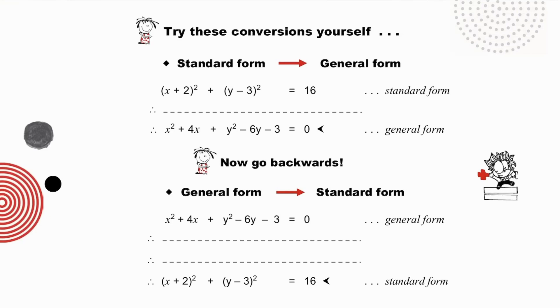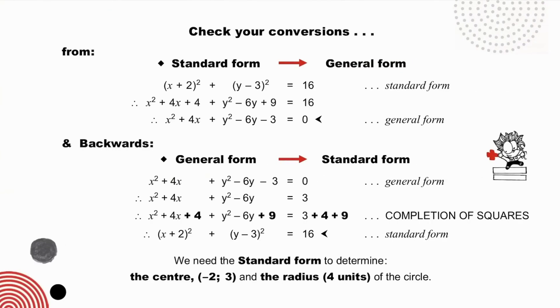Pause to try these conversions yourself, going from standard form to general form, and then from general form to standard form, which is going backwards. Pause to check your conversions. Going from the standard form to the general form is a fairly straightforward process, but it's not quite so simple when we want to go backwards.